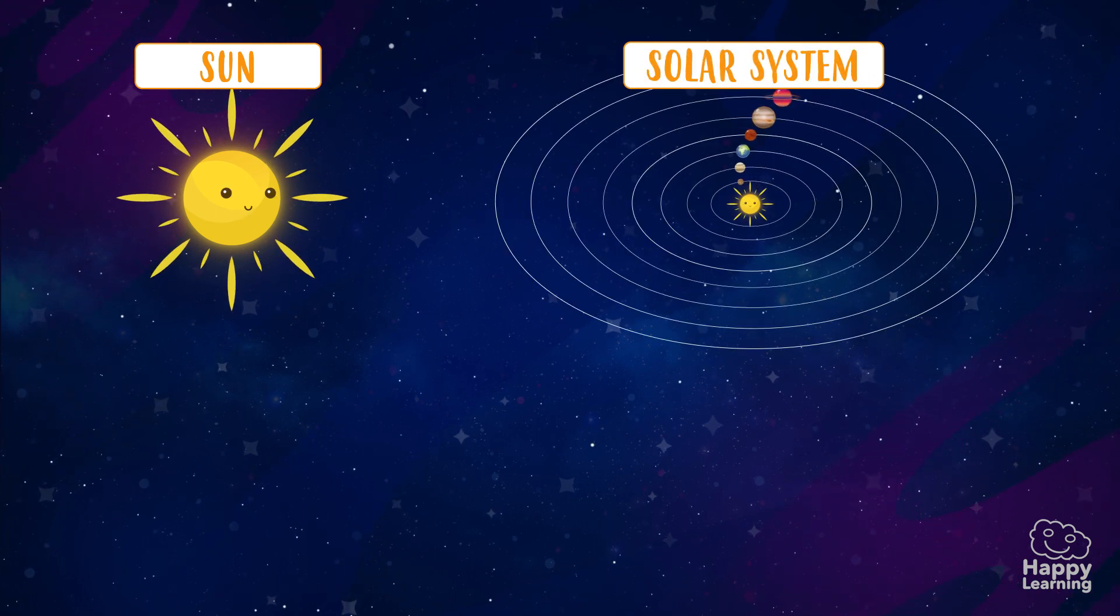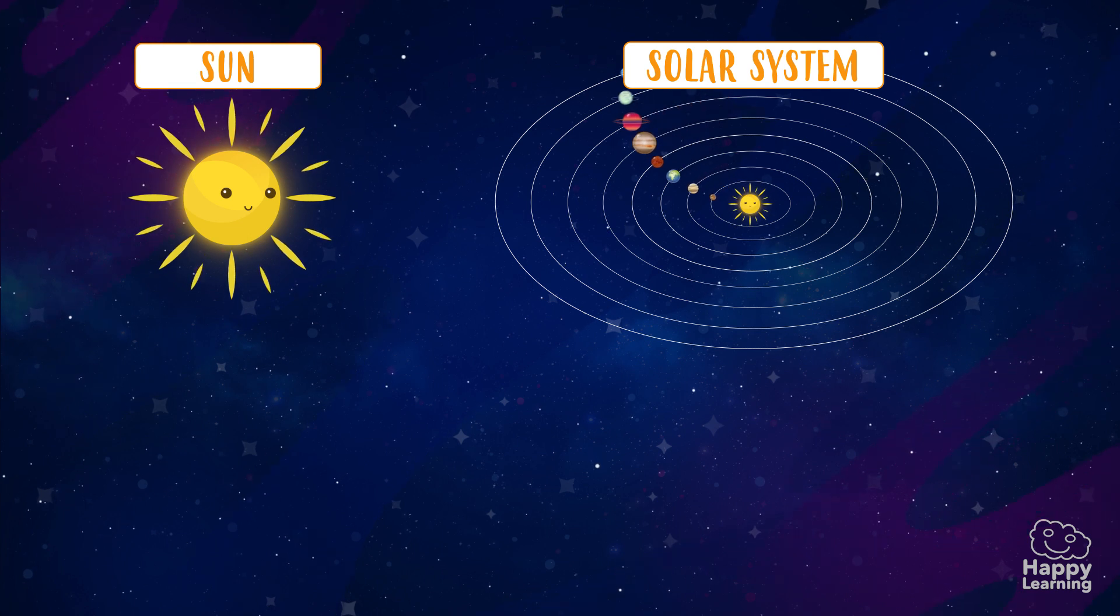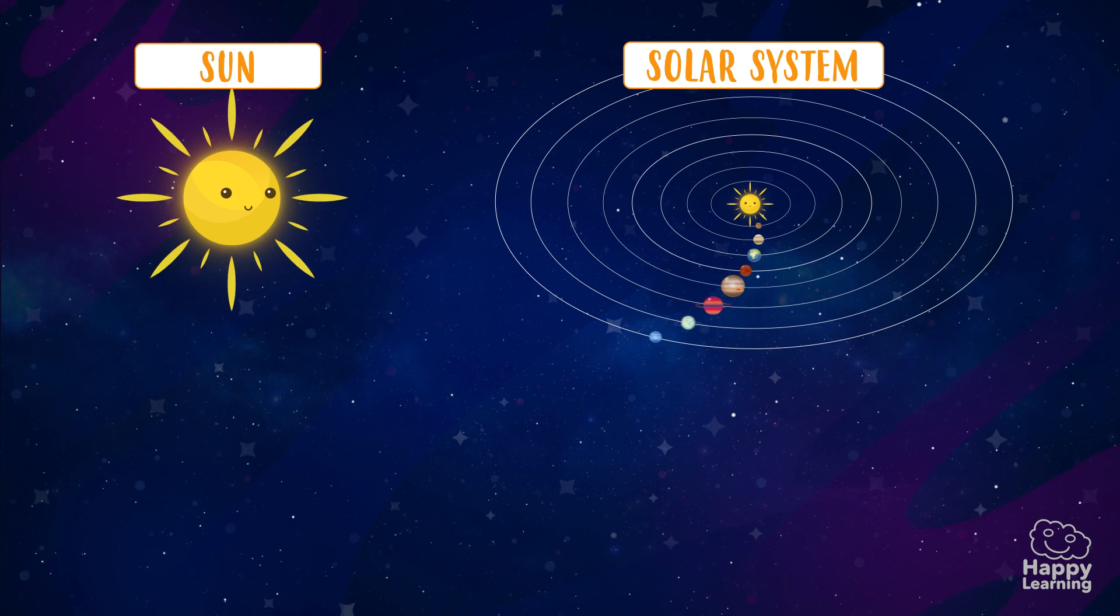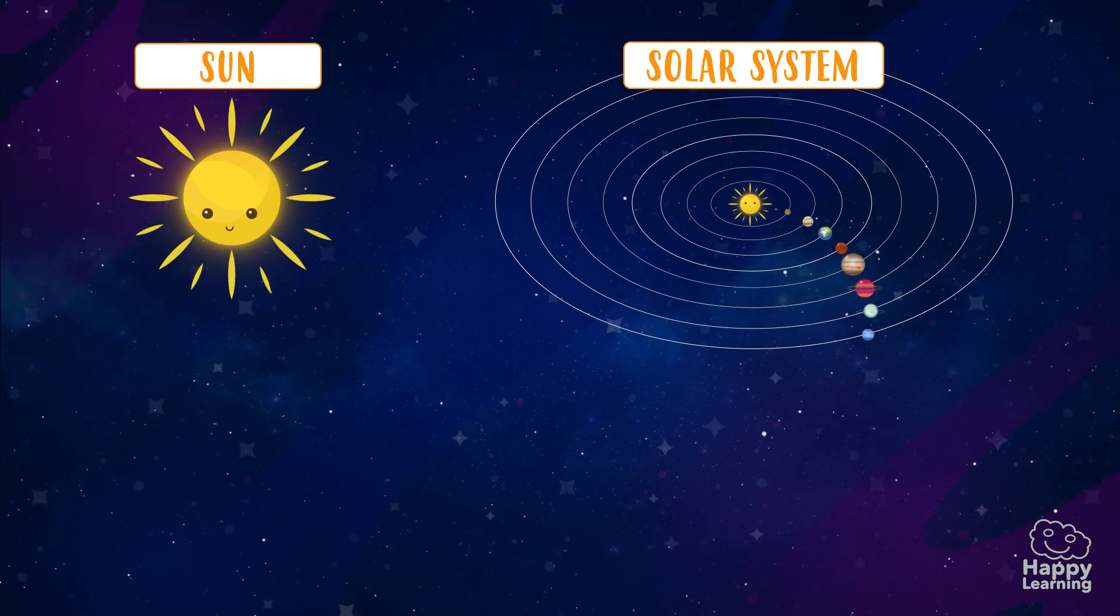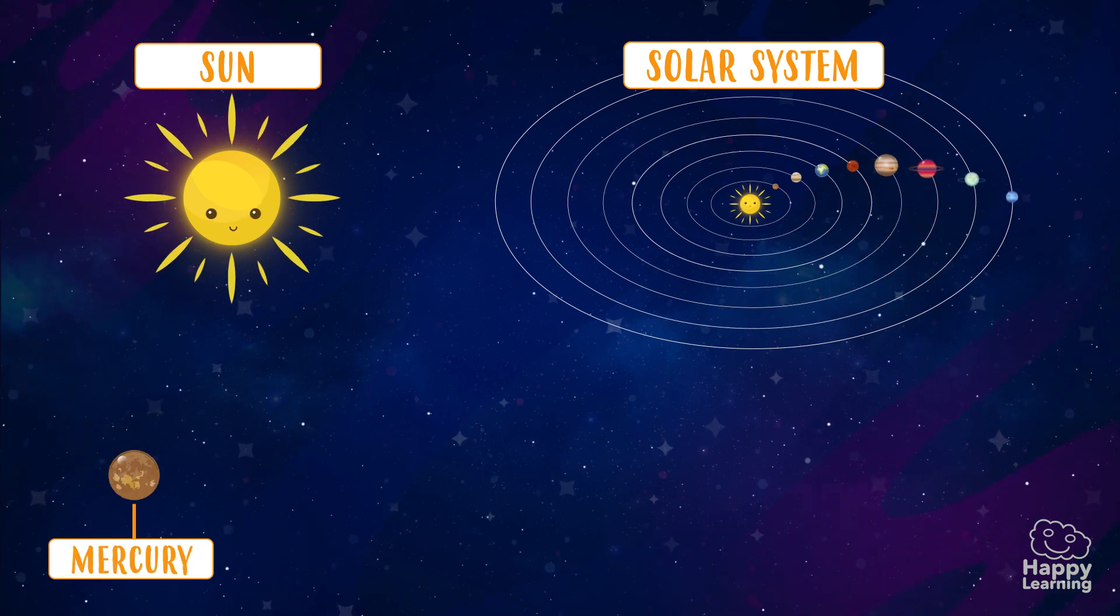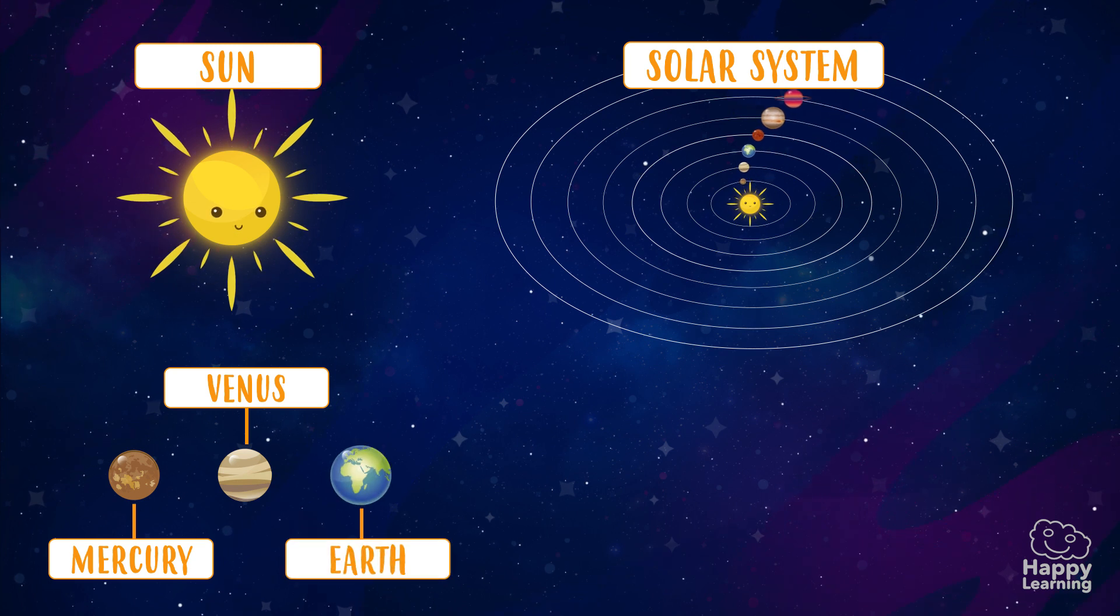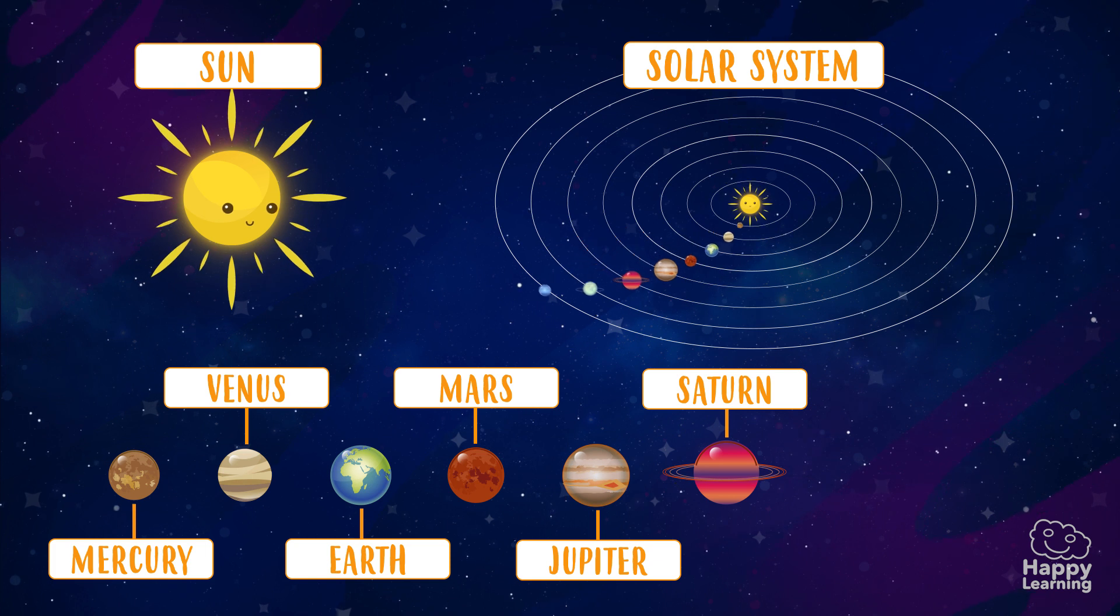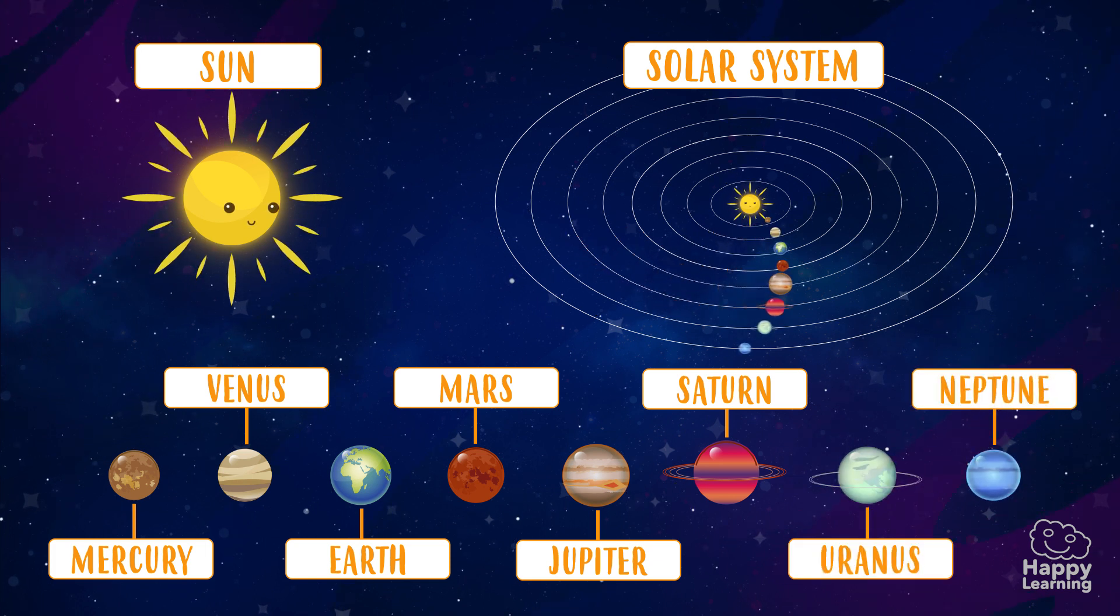The solar system is the sun and all asteroids moving around it, and it has eight planets: Mercury, Venus, Earth, Mars, Jupiter, Saturn, Uranus, and Neptune.